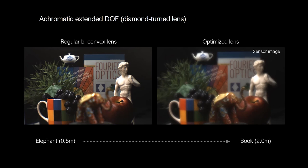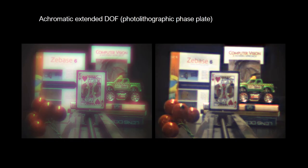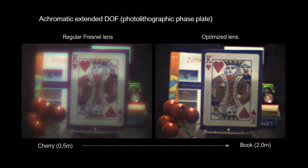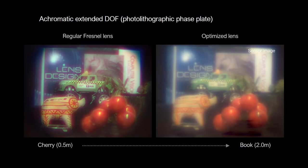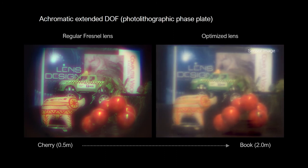Here is an additional example with a large depth range. In addition, we fabricated an optimized lens using photolithography. Here we compare with a Fresnel lens for a scene with large depth range. Here is an additional example with a large depth range. Notice the severe chromatic aberrations for the Fresnel lens.